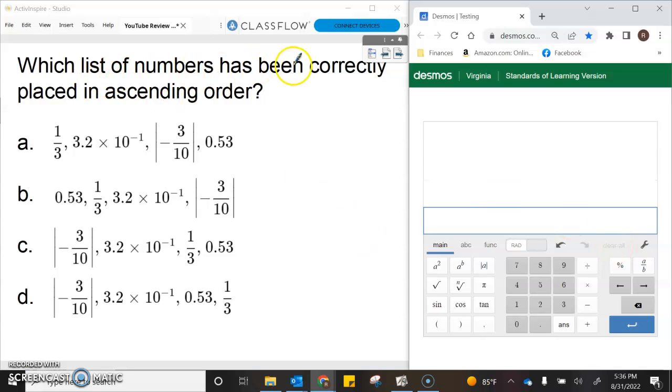This is asking which list of numbers has been correctly placed in ascending order. Ascending means we're going up, so we're starting with small and then going to big.